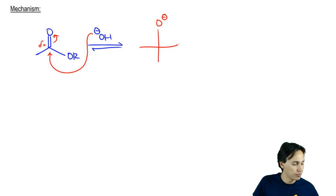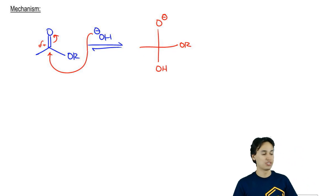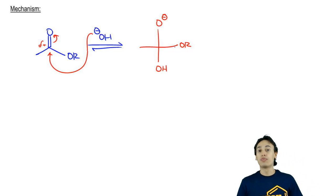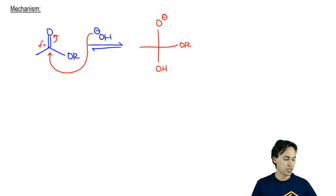So I've got O−, I've got OR, I've got OH, and I've got my carbon. Then we're going to go ahead and reform the double bond. We're not going to protonate because this is nucleophilic acyl substitution. This is an NAS reaction.